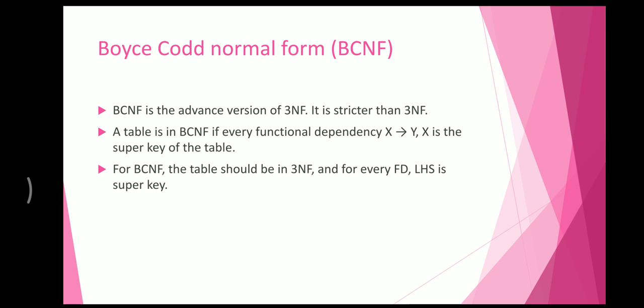Now we will see the Boyce-Codd Normal Form (BCNF). BCNF is an advanced version of 3NF. A table is in BCNF if, for every functional dependency X → Y, X is a super key of the table. For BCNF, the table should be in 3NF and for every functional dependency, the left-hand side must be a super key.